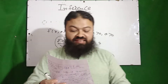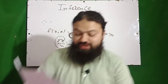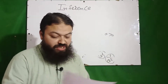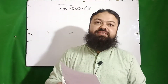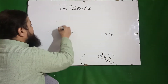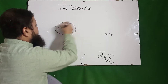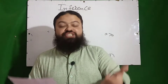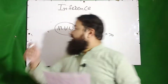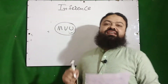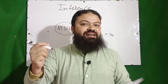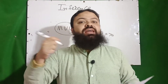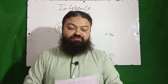Next: the Rao-Blackwell theorem gives a procedure for determining the MVU — minimum variance unbiased — estimator. This is the correct answer. The Rao-Blackwell theorem provides the procedure for finding the estimator which is unbiased and has minimum variance.